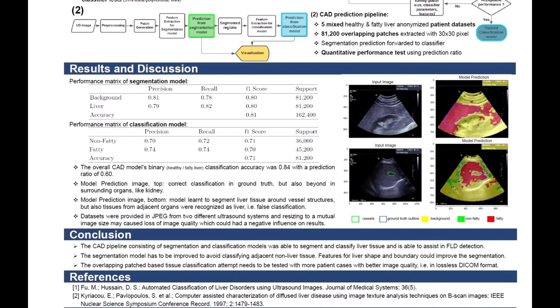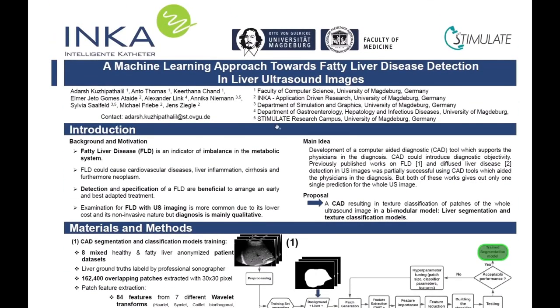In conclusion, our segmentation-classification pipeline was able to segment most liver regions and give classification within those segments, though the segmentation still needs improvement — for example, by introducing liver shape and boundary features. The overlapping patch-based tissue classification approach needs to be tested with more patient cases and better image quality. The amount of data was quite low, limiting tissue pattern diversity, so we look forward to testing on DICOM format images. Thank you for your attention.